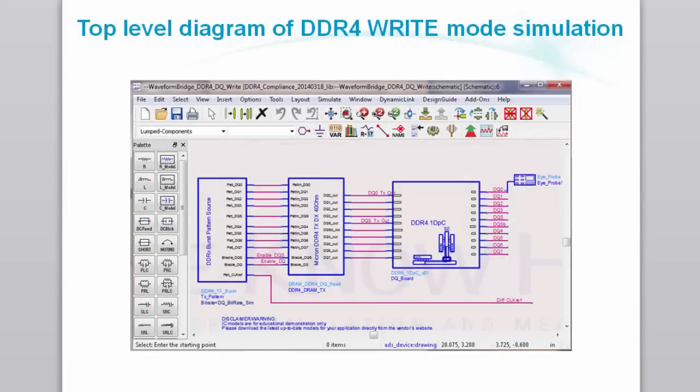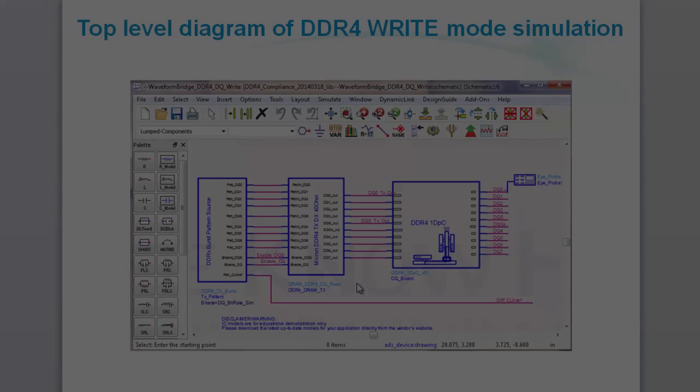We begin with the simulated test bench, which is modular and hierarchical, so you can easily customize it by swapping out generic blocks for your IP blocks as needed. You can use netlist models, traditional IBIS models, S-parameter models from an EM simulator, or whatever — anything that runs under transient simulation.